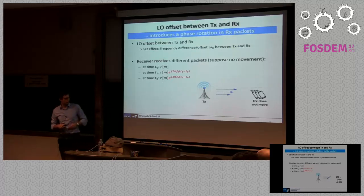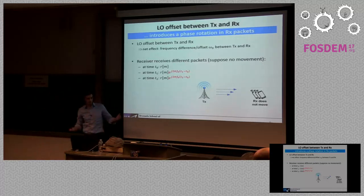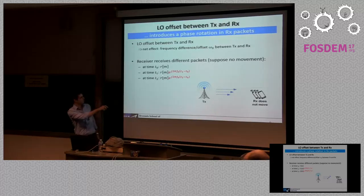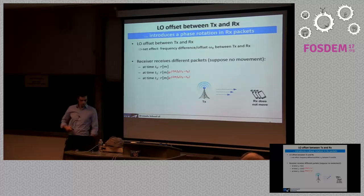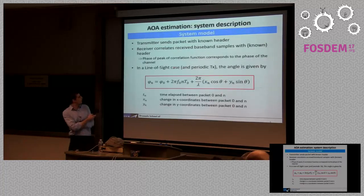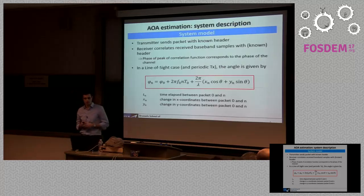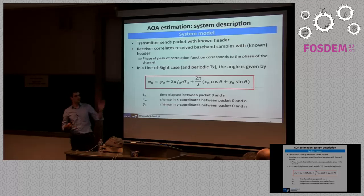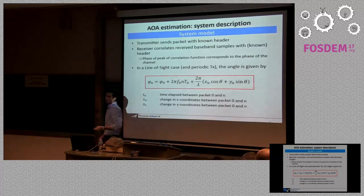To illustrate the frequency offset problem: if you have a receiver standing still and receiving multiple packets, at the first instance it receives some baseband signal. At the next time instance T1, it receives the same signal with some phase shift due to the frequency offset. Assuming a line-of-sight channel — we're not dealing with multipath channels at this stage — the phase of each received packet is given by a term with some initial phase, a term due to frequency offset, and a term due to displacement of the receiver. This displacement term is essentially the beam steering vector from signal processing or antenna courses.